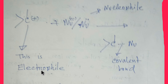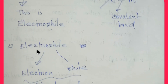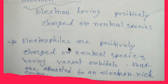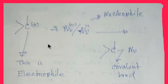This is the nucleophile and this is the electrophile. Electrophile equals 'electron' plus 'phile' — so electron-loving, positively charged or neutral species. Electrophile is an electron-loving, positively charged or neutral species. Now here is the full definition: electrophiles are positively charged or neutral species having vacant orbitals that are attracted to an electron-rich center. If you observe this example, you will see this is the electrophile attracting to the electron-rich center, which is the nucleophile.